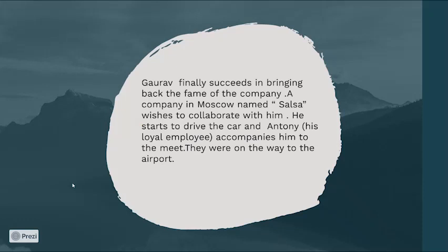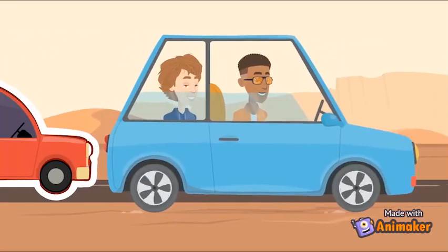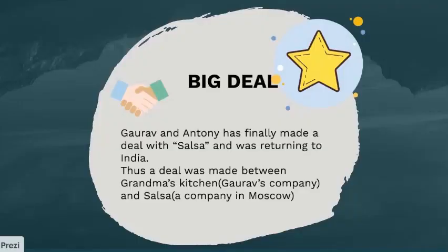Gaurav finally succeeds in bringing back the fame of the company. A company in Moscow named Salsa wishes to collaborate with him. He starts to drive the car and Anthony, one of his loyal employees, accompanies him to the meeting. They were on the way to the airport. Gaurav and Anthony finally made a deal with Salsa and were returning to India. A deal was made between Grandma's Kitchen, which was Gaurav's company, and Salsa, a company based in Moscow.